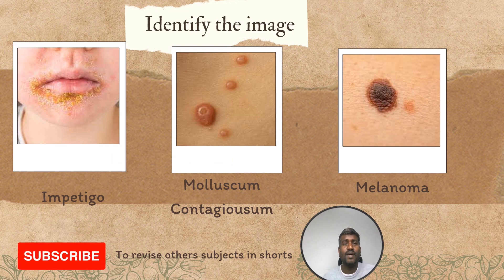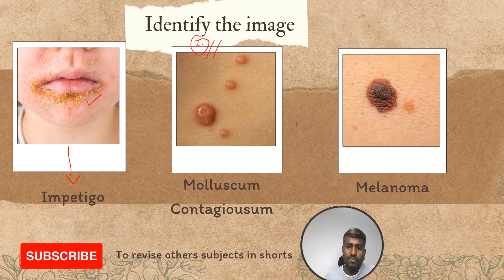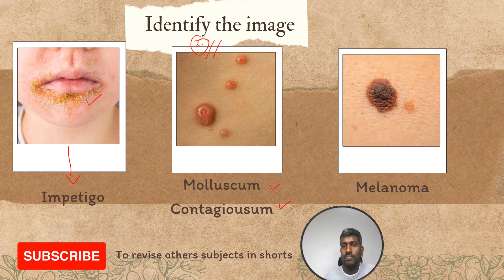Let's identify these images: the first one shows honey crust, which is impetigo. The second is molluscum contagiosum — a poxvirus with central umbilication. The third image is melanoma, which is malignant, with cancer starting from the melanocytes.